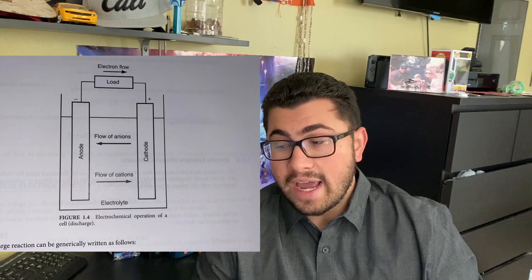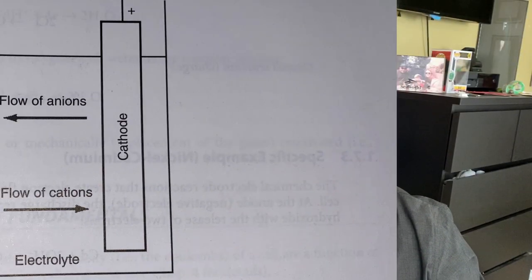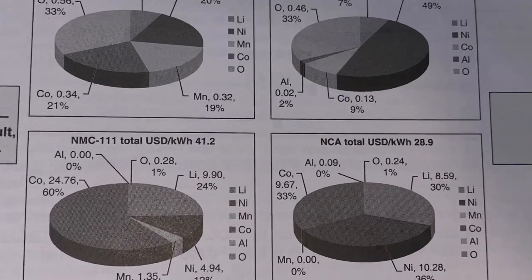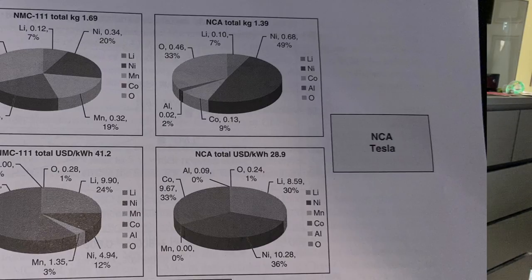Next we're going to talk about battery components. The first component is the cathode, also known as the positive electrode. This is what a lot of people refer to as the cell chemistry — for example, Tesla uses an NCA chemistry in their cells, while LG Chem generally uses an NCM 111 with future cells moving to NCM 811. The cathode is important because it's generally one of the guiding parts of the cell that determines power output, specific energy, stability, and longevity of the cell. It's one of the things you can change the most that has the biggest effect on overall cell performance, and it represents around 22% of the total cost to manufacture the cell.